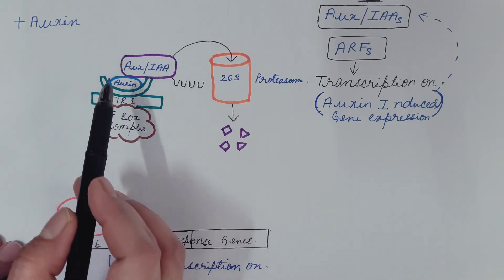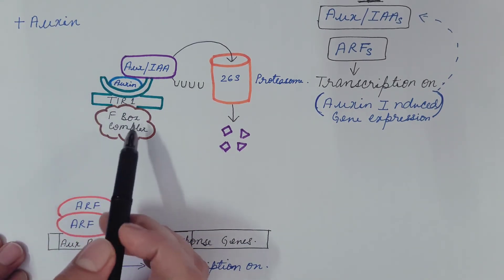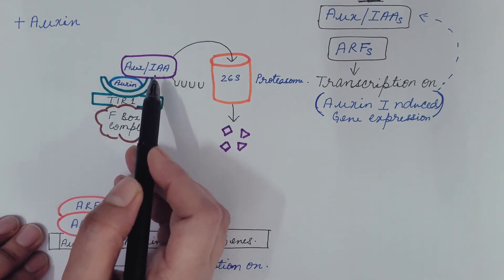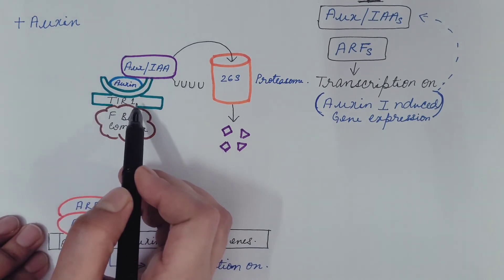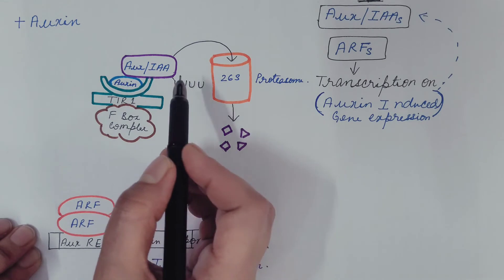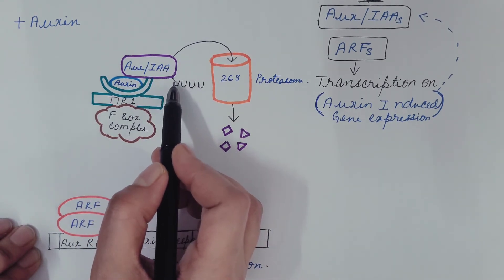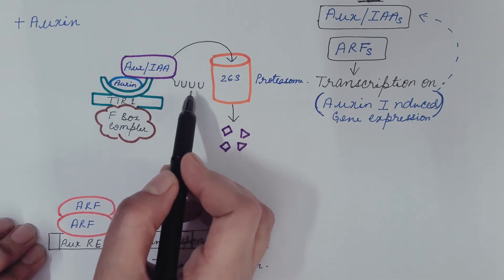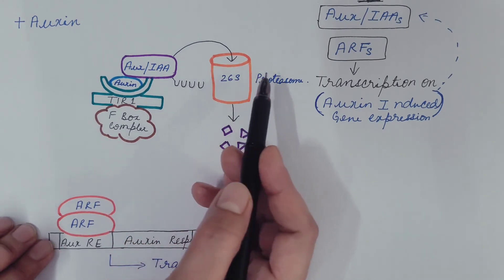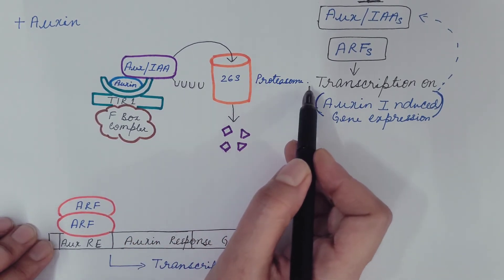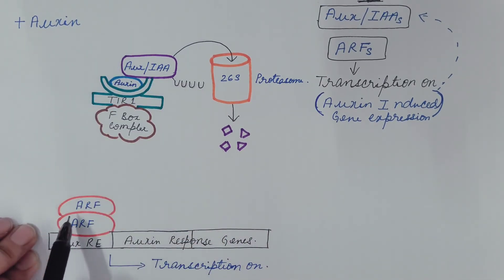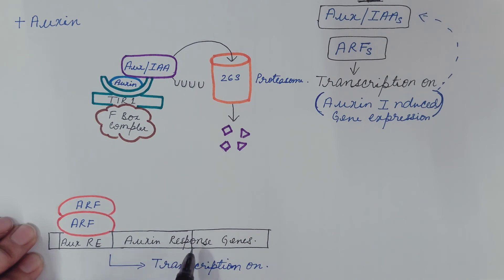Let us understand this with the figure. Auxin is present — it comes and binds with the auxin receptor, acting as the molecular glue between AUX/IAA and the receptor. This receptor also has E3 ligase activity and tags AUX/IAA with polyubiquitin. The inhibitor, tagged with polyubiquitin, then undergoes proteolysis by the 26S proteasome and is degraded. In the absence of this inhibitor, ARF is free — it forms a homodimer and results in the transcription of auxin response genes.